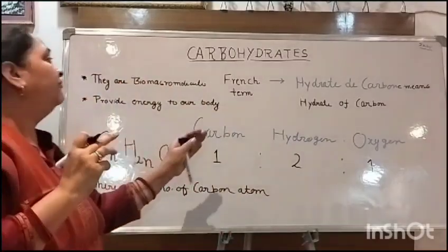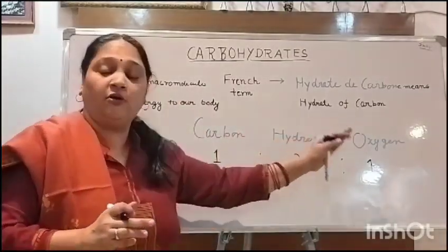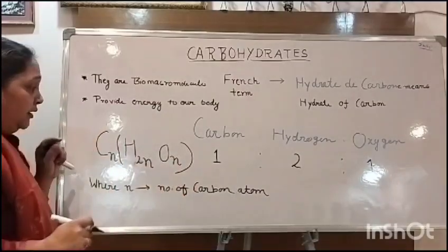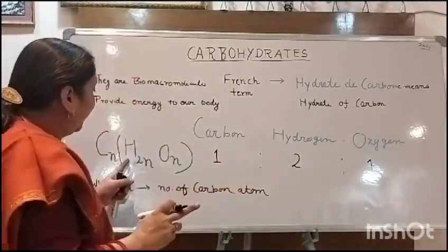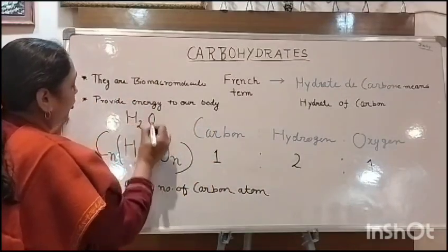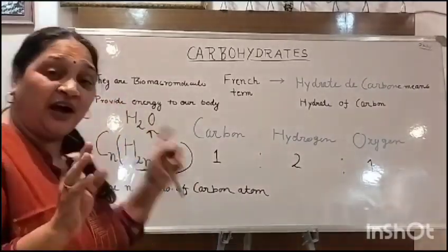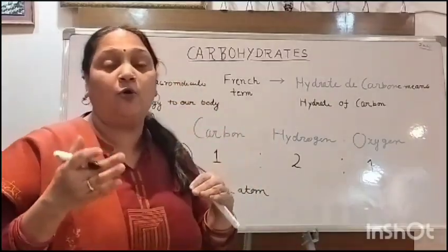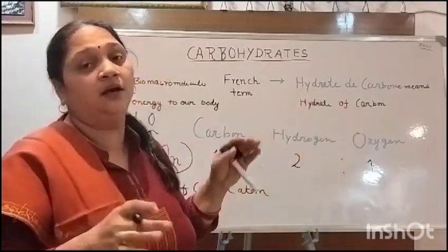Now I am going to explain why they are hydrates of carbon. If we see carefully, carbohydrates have the same proportion of hydrogen and oxygen as is present in water. Water is H2O, and carbohydrates have that same proportion — that is why they are called hydrates of carbon.